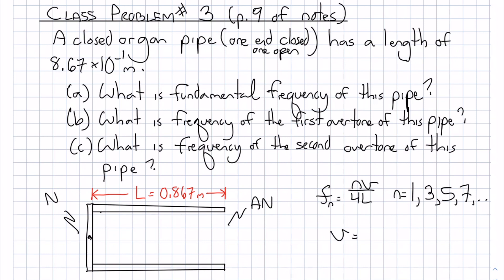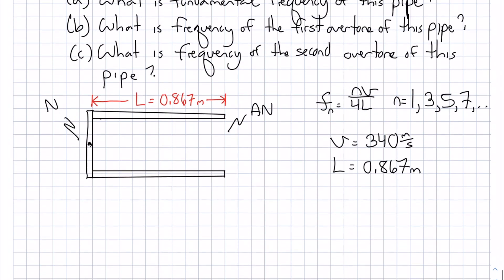And we know that v is 340 meters per second, the speed of sound in air, and L is going to be 0.867 meters. Okay, so with that in mind, let's calculate the fundamental frequency.